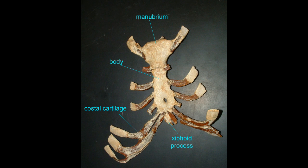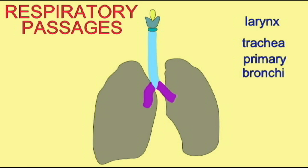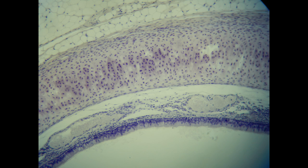Hyaline cartilage also forms the costal cartilages, which link ribs to the sternum, and forms upper respiratory tract structures such as the larynx and the trachea. Here in the trachea, one can observe hyaline cartilage.